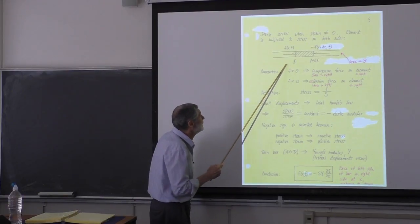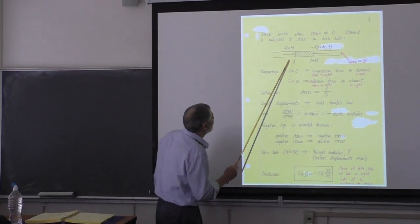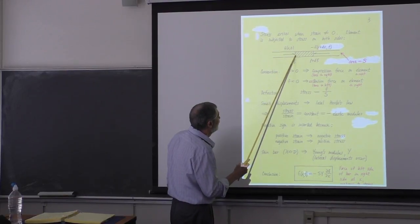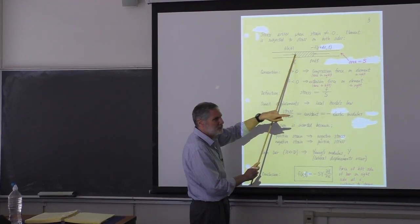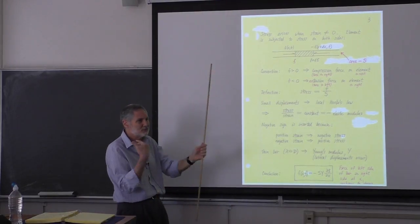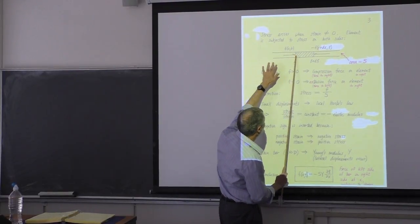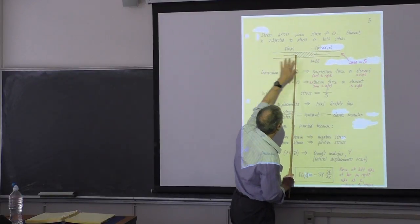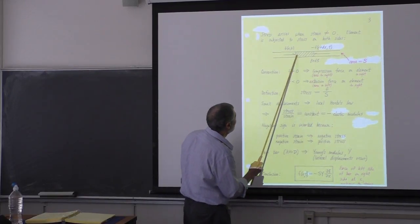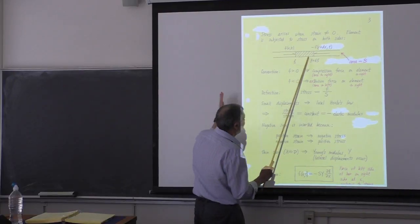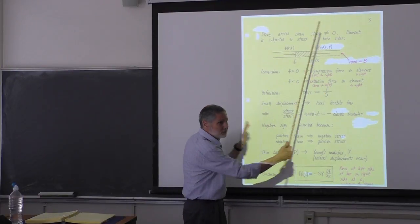By convention, F is the force at a point — the force of the left side on the right side. We have to specify that, otherwise we could get confused with signs. By convention, this F is the force of the left part of the bar on the right part of the bar. If it's positive, it's to the right, and that's going to tend to cause a compression. If F is negative, it's going to cause an extension of the material.